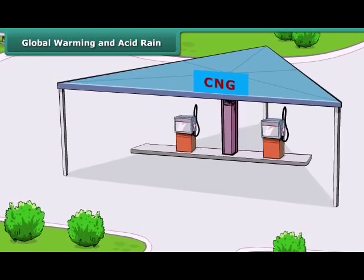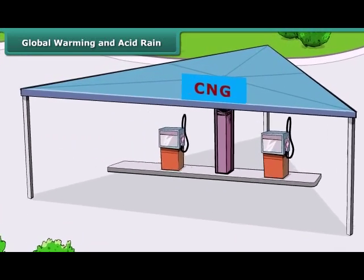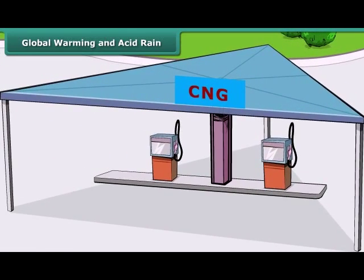There are ways we can reduce negative impact on the environment by choosing the right fuel. A great example is cars, buses, and auto rickshaws that run on compressed natural gas, or CNG, instead of petrol. CNG is a much cleaner and cheaper fuel.